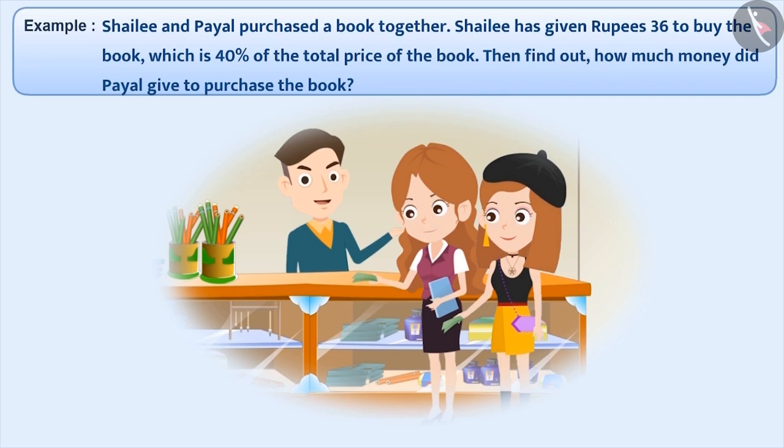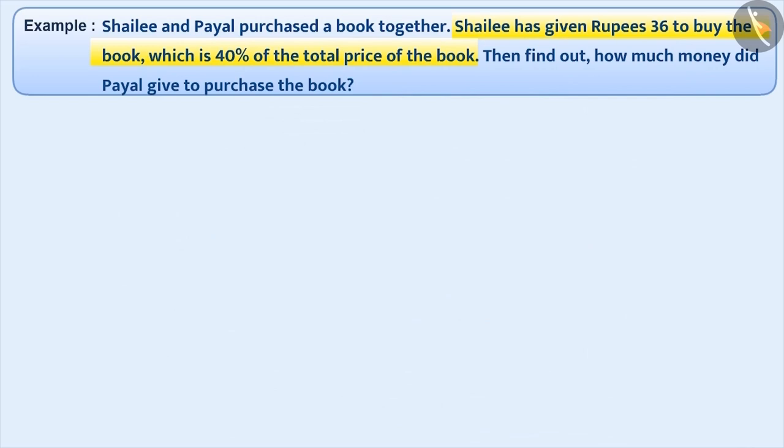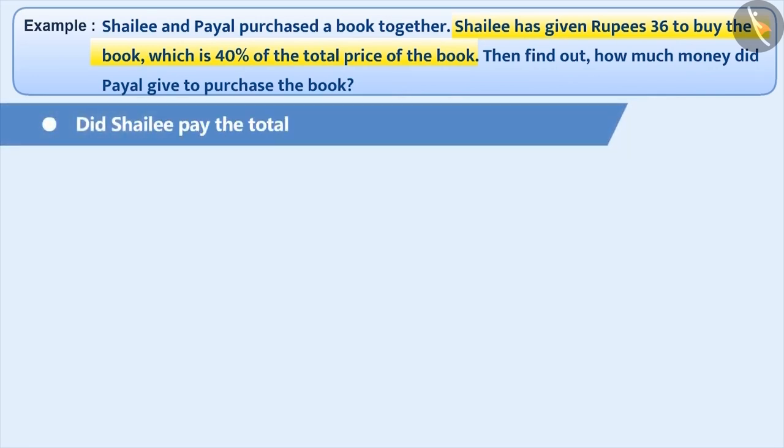First, focus on the statement, Shailee has given Rupees 36 to buy the book, which is 40% of the total price of the book. Can you tell what this means? Think for a while. Let me tell you. Let's understand it with some questions. Did Shailee pay the total price of the book? No.